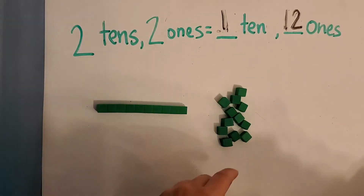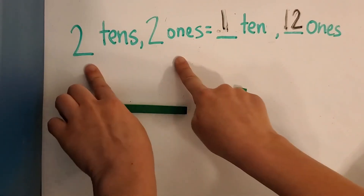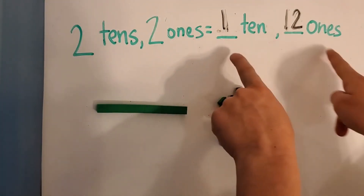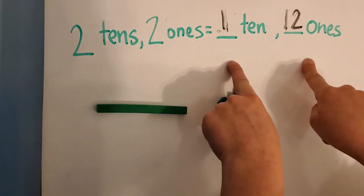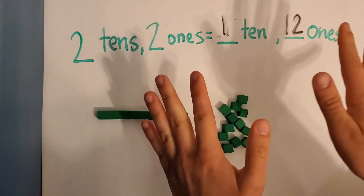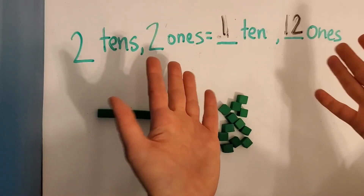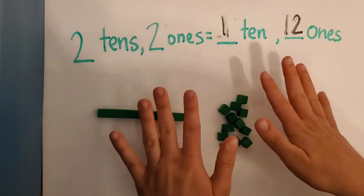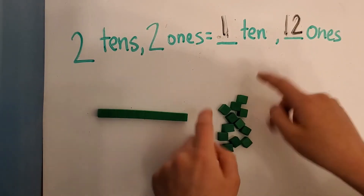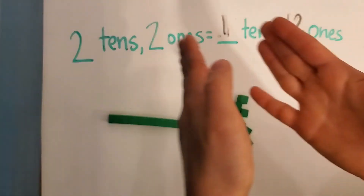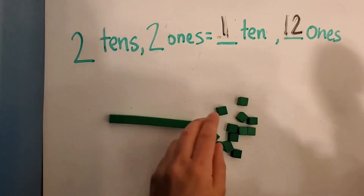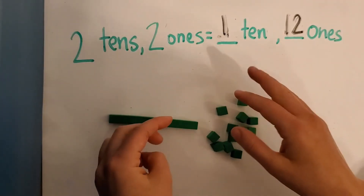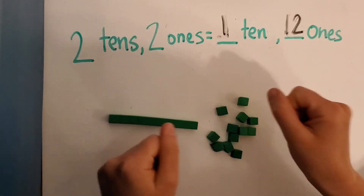So boys and girls, you are going to be doing these kinds of math problems on your worksheet today. You're going to have numbers like two tens, two ones, and then you're going to have to regroup one ten into ten ones. So take your time on this — it's a little bit confusing. This is important for us to practice subtraction and to learn more about subtraction. If you have any questions, please feel free to let me know. We're regrouping tens into ones. I hope that you understood this lesson. I can't wait to see your worksheets. Keep up the good work, boys and girls — you've got this. You have been working so hard, I'm so proud of you.